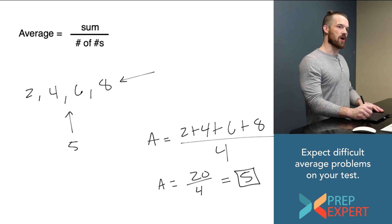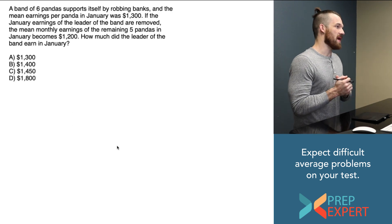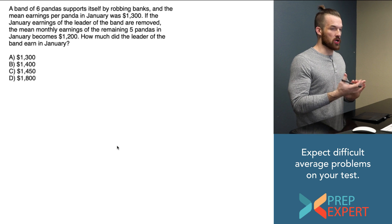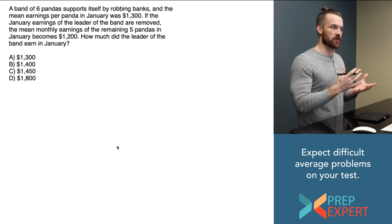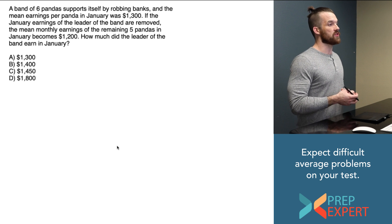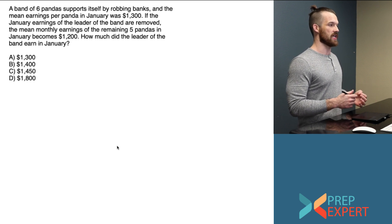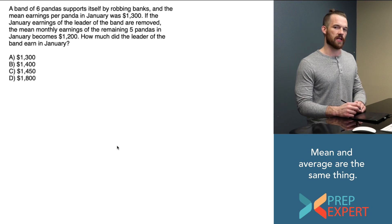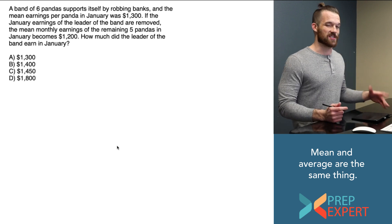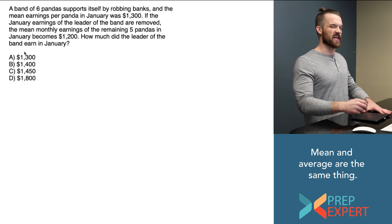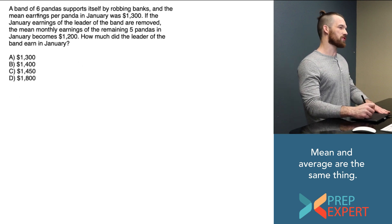And that will pay off when the problem looks more like this. A band of 6 pandas supports itself by robbing banks, and the mean earnings per panda in January was $1,300. If the January earnings of the leader of the band are removed, the mean monthly earnings of the remaining 5 pandas in January becomes $1,200. How much did the leader of the band earn in January? So as you can see, this is a much more difficult average problem but the formula that we used on the previous slide can help us here. So let's write down first what we know.